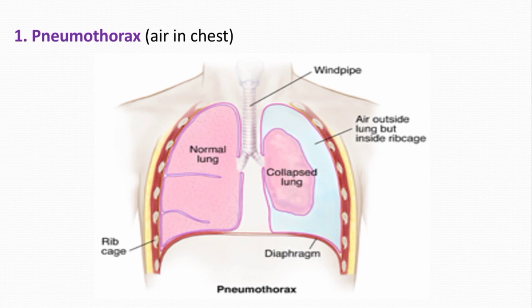There are various causes of pneumothorax, such as stab wounds and bullet injuries, which cause a hole in the chest wall through which air from outside enters the chest cavity and makes its pressure positive. The normal negative pressure of the pleural space is replaced by positive pressure, which compresses the lungs so they cannot expand properly. This is a very serious condition and a medical emergency — in very severe cases, death can occur.